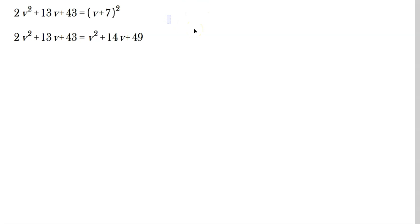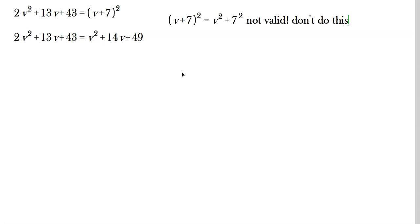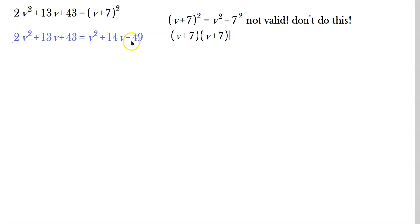Expand by FOIL: v squared, then v times 7 doubled gives 14v, and then 7 squared is 49. A common mistake is to just write v squared plus 7 squared — that is not valid. You must use FOIL: (v plus 7)(v plus 7) equals v squared plus 14v plus 49.